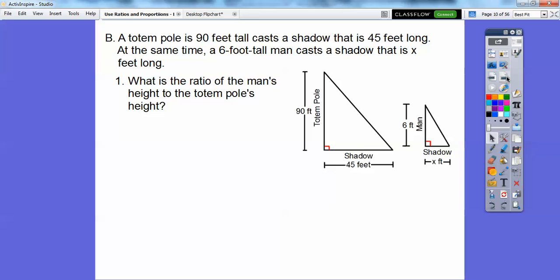It's asking you, what is the ratio of the man's height to the totem pole's height? Well, remember, ratio means fraction. So the man's height is 6 feet and the totem pole's height is 90 feet right there. Okay, so there's a ratio.